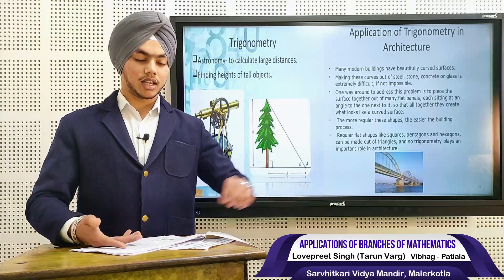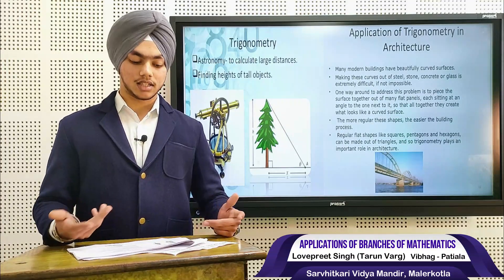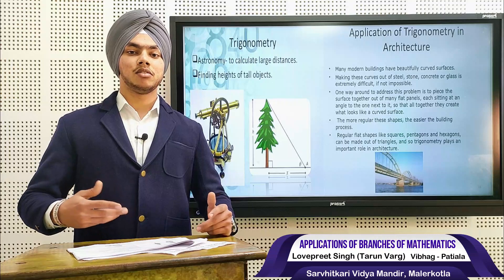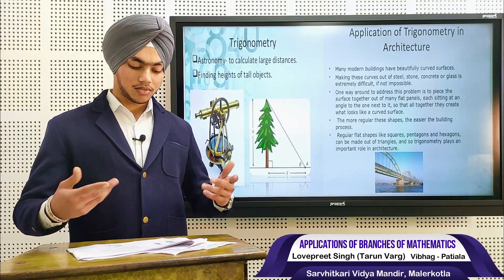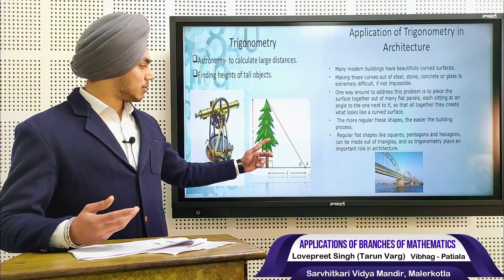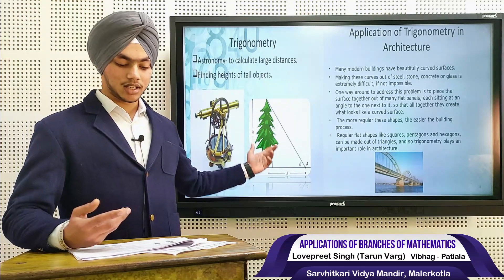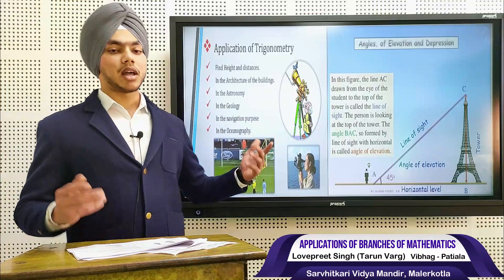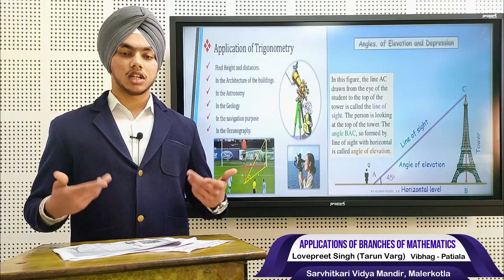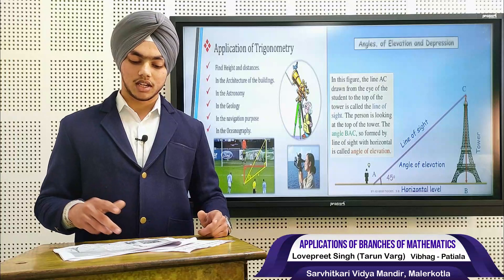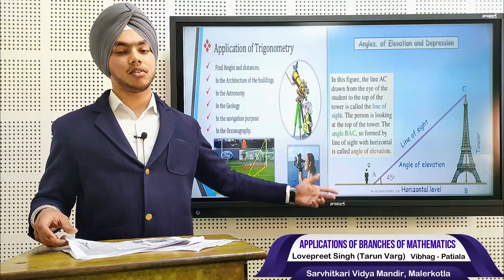Next, we talk about another application: trigonometry. Trigonometry is used for various purposes, such as in astronomy to calculate large distances. In daily life, we use it to find distances and heights. For example, standing at a point and knowing the angle of elevation to the tip of a tree, we can find its height very easily. Trigonometry is also used in geology, navigation, and oceanography. As shown in the figure, we can calculate the height of a tower using only trigonometry.